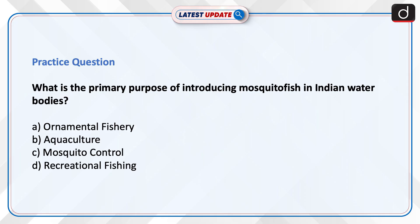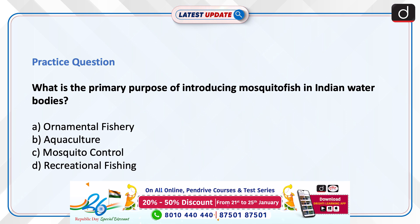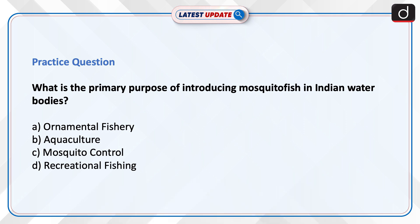Now is the time to test your knowledge. The question is: what is the primary purpose of introducing mosquito fish in Indian water bodies? Your options are: ornamental fishery, aquaculture, mosquito control, or recreational fishing. Send the answer to this question in the comment section. Thanks for watching.